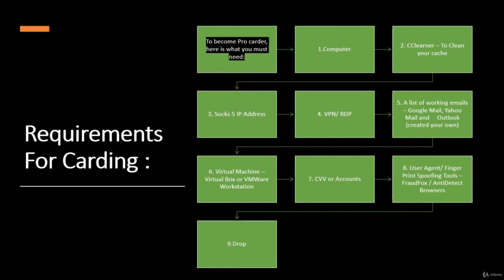Sixth, you need a virtual machine to remain anonymous and safe. There are various virtual machines available such as VirtualBox and VMware Workstation — you can install Windows in them for safety. The most important requirement is the CC itself, which you can buy from the surface web, dark web, or deep web. I will show you the entire procedure from zero to hero.